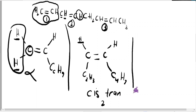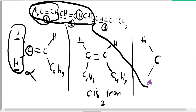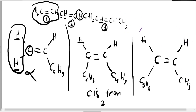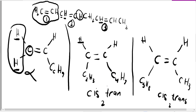In double bond three, this carbon atom is bonded to one hydrogen and a C5H8 group on the bottom side. On the right side, there is a hydrogen on top and a CH3 group on the bottom. Since both carbons have two different groups bonded to them, double bond three also exhibits cis-trans isomerism. In total, there will be four isomers of this compound — two from double bond two and two from double bond three.